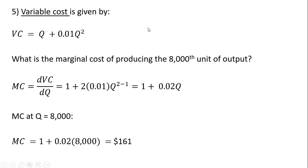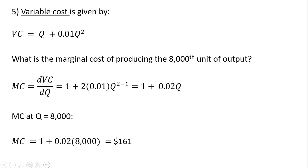Example 5. We're given variable cost, not total cost — you'll notice we're missing a constant, i.e., we're missing fixed costs. Variable costs do not include fixed costs. We want to find the marginal cost of producing the eight-thousandth unit. Taking the derivative of variable cost with respect to output gives us marginal cost: the derivative of q is 1, and the derivative of the last term gives 0.02q. Plugging 8,000 in for q, the marginal cost is $161.